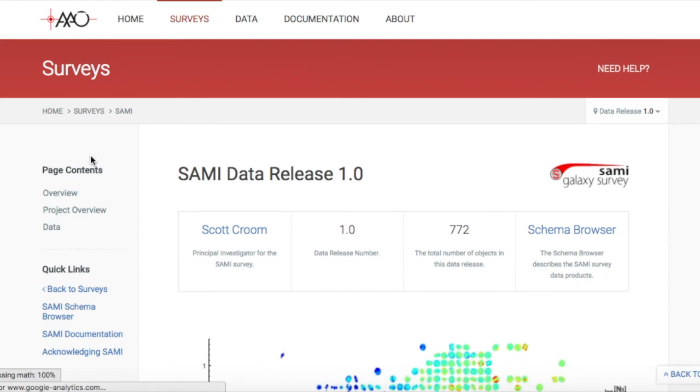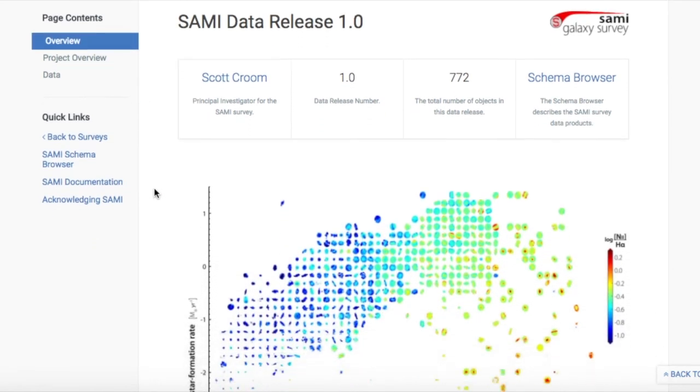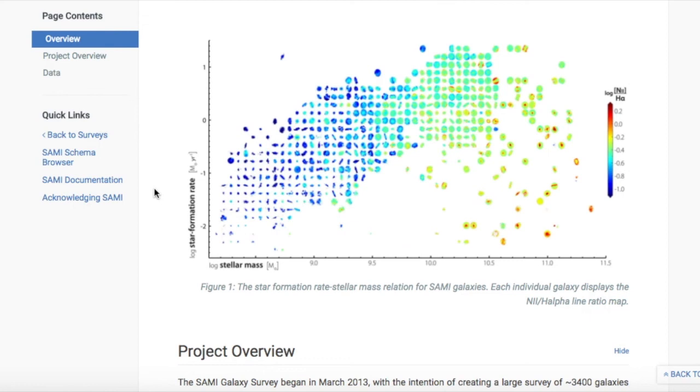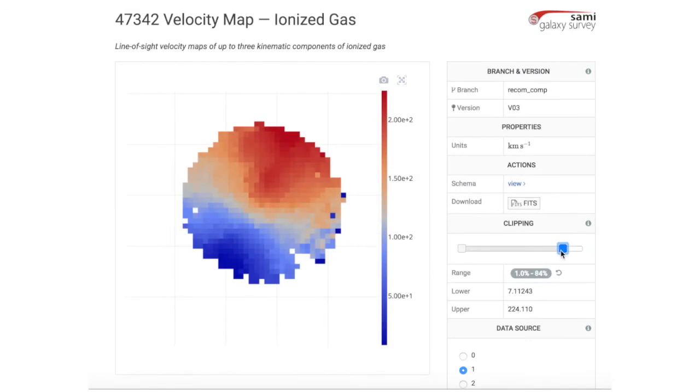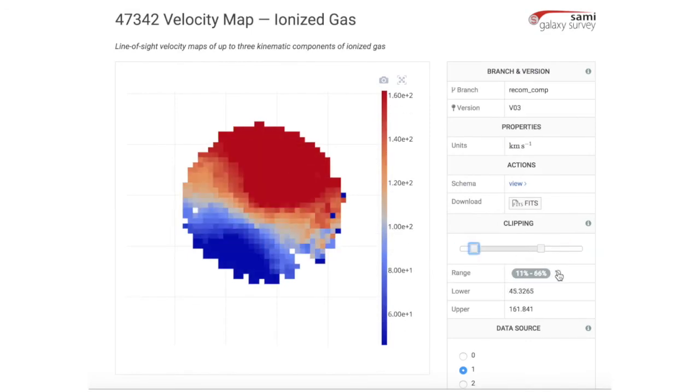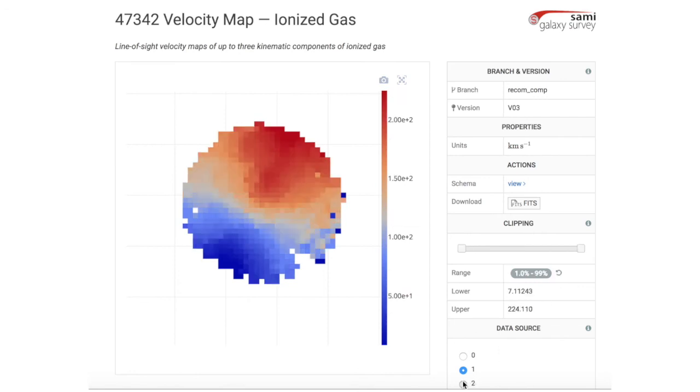SAMI is an ambitious and innovative project that has aimed to answer some of the most daring questions in galaxy evolution. From early results, astronomers have found interesting features that are telling us more about galaxies and, of course, introducing more questions. With the next-generation projects already in motion, multi-object integral field spectroscopy has only begun to scratch the surface in galaxy evolution research.